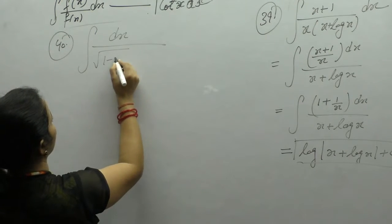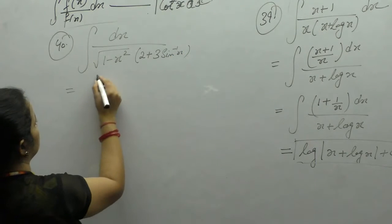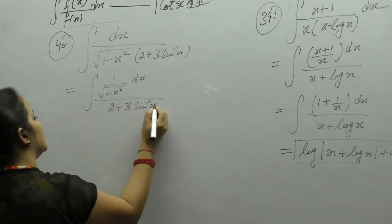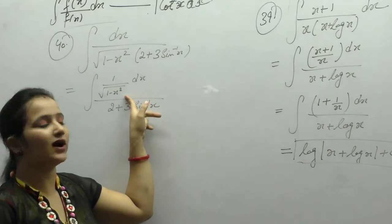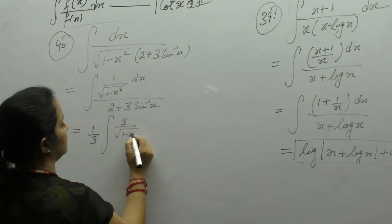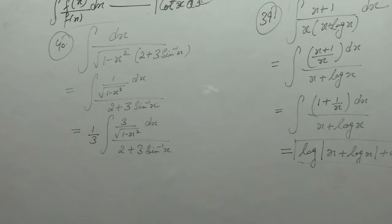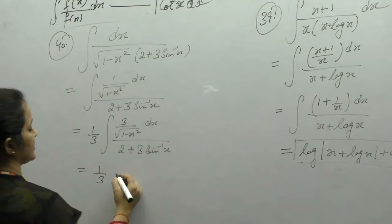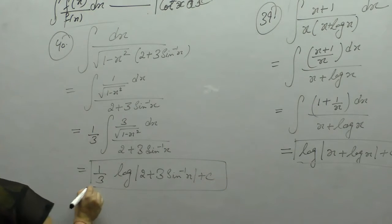dx upon √(1 - x²) into (2 + 3 sin⁻¹x). We write 1/√(1 - x²) dx upon (2 + 3 sin⁻¹x). Derivative of 2 is 0, 3 is constant, and derivative of sin⁻¹x is 1/√(1 - x²). We multiply and divide by 3. Now in the numerator we have the derivative of the term in the denominator, so we apply the formula f'(x)/f(x) = log|f(x)|. We can also do it by substituting the denominator as t.